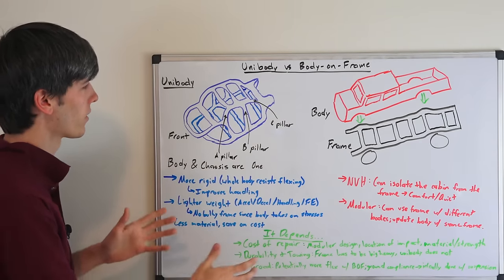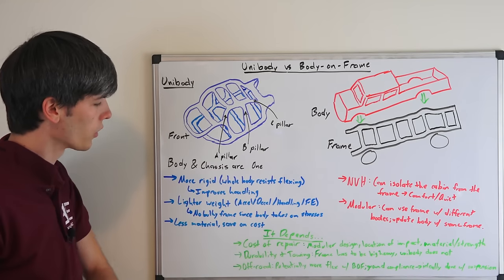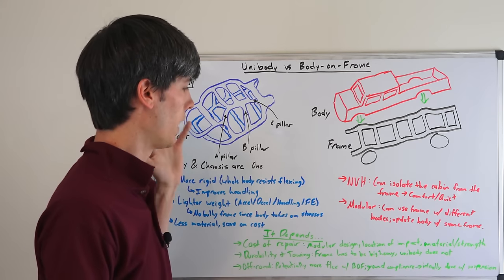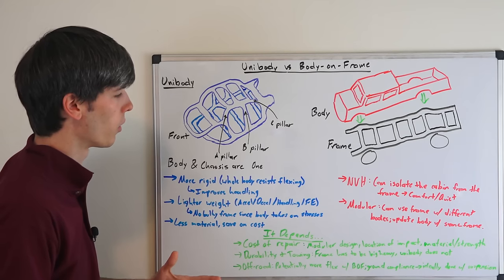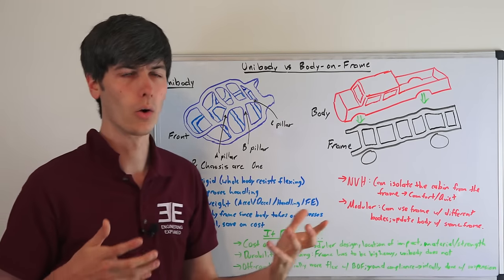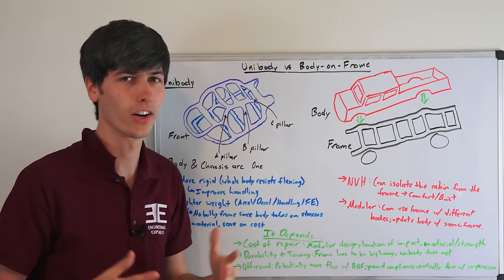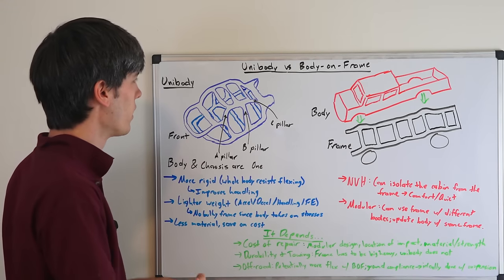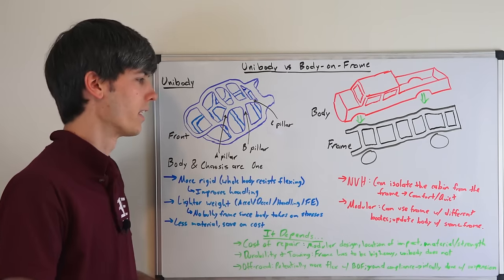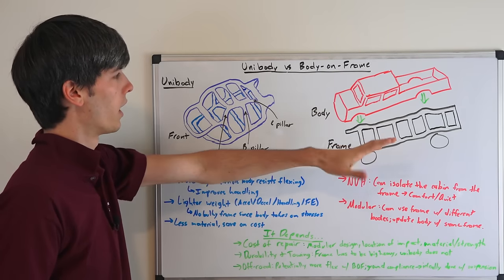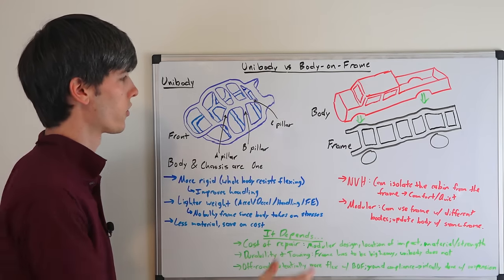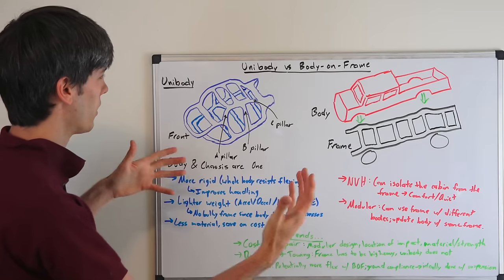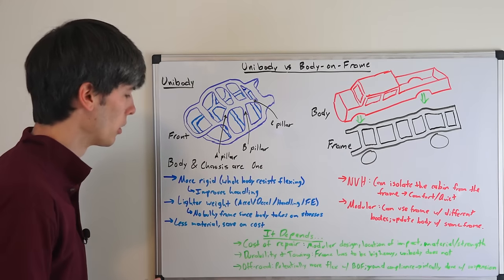Also durability and towing. So because the frame has to be large and heavy, it tends to be more durable. That doesn't mean that a unibody cannot be durable or useful for towing. You could just make it beefier and heavier and have a same weight vehicle as body on frame and have it be just as beefy and heavy. The advantage of this is that you can get away with less weight. So it's not necessarily an advantage, an inherent advantage of the design. It's just that because you have to use a beefy frame, it's going to be durable, it's going to be better for towing. But that doesn't necessarily mean you can't do the same with a unibody, which you absolutely could.